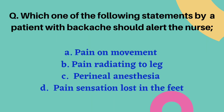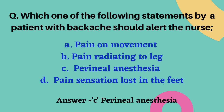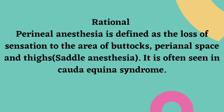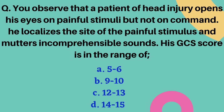Which statement by a patient with backache should alert the nurse? Options are pain on movement, pain radiating to the leg, perineal anesthesia, and pain sensation lost in the feet. The correct answer is option C — perineal anesthesia, also called saddle anesthesia, defined as loss of sensation to the area of the buttocks, perineal space, and thighs. It is often seen in cauda equina syndrome.